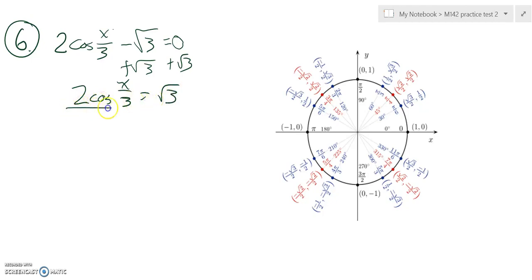This is 2 multiplied by that, so I'm going to divide everything by 2. So I get cosine of x over 3—whoops, I meant to say x over 3—is equal to root 3 over 2.